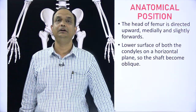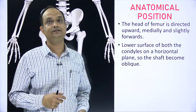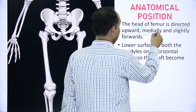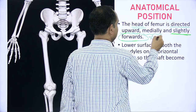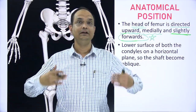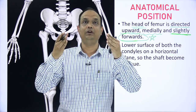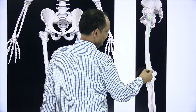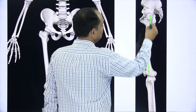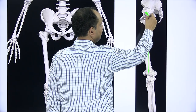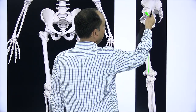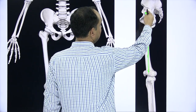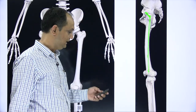Anatomical position means how the bone is placed in the body. The head of the femur is directed upward, medially, and slightly forward. The head is not in the same plane as the shaft — it is tilted forward. In this diagram you can see the shaft of the femur, and the head has this tilted forward orientation rather than being in the plane of the shaft.